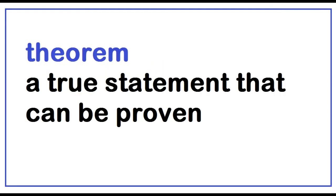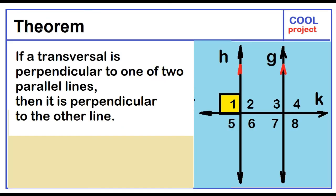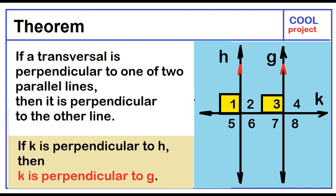A true statement that can be proven: if a transversal is perpendicular to one of two parallel lines, then it is perpendicular to the other line. If line K is perpendicular to line H, then line K is perpendicular to line G.